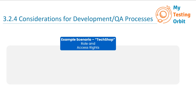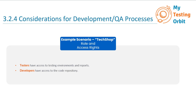Your team consists of various members as part of the TechShop project, including testers, developers, and project managers. To maintain security, the TAA enforces role-based access control. In this scenario, testers have access to the testing environment and reports, developers can only access the code repository, and project managers can view reports and monitor progress but cannot modify tests or code.